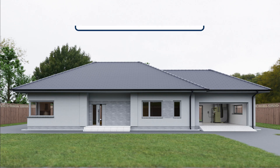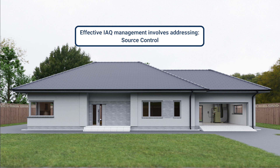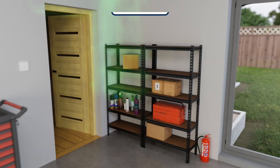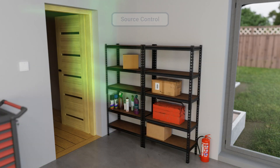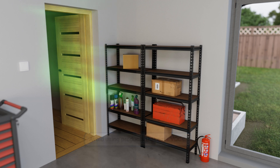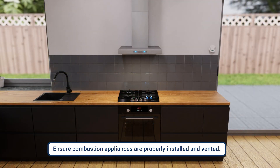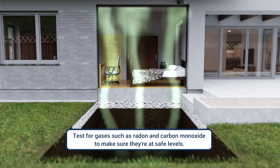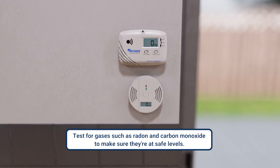Effective indoor air quality management involves addressing source control, pathways, filtration, ventilation, and humidity. For source control: avoid using products that emit VOCs, ensure combustion appliances are properly installed and vented, and test for gases such as radon and carbon monoxide to make sure they're at safe levels.